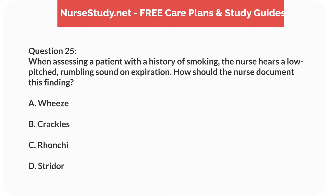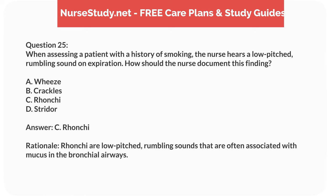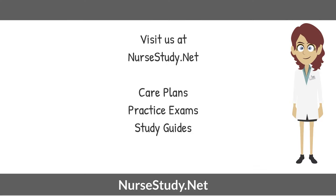Question 25. When assessing a patient with a history of smoking, the nurse hears a low-pitched, rumbling sound on expiration. How should the nurse document this finding? A. Wheeze. B. Crackles. C. Rhonchi. D. Stridor. Answer: C. Rhonchi. Rationale: Rhonchi are low-pitched, rumbling sounds that are often associated with mucus in the bronchial airways. Visit nursestudy.net for more nursing practice exams, care plans, and study guides.